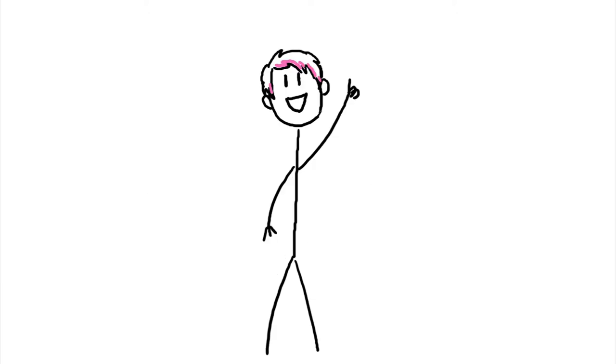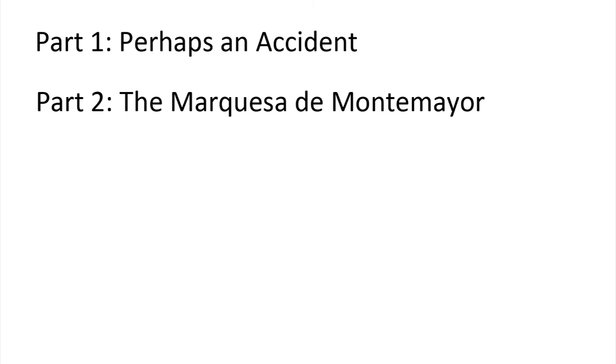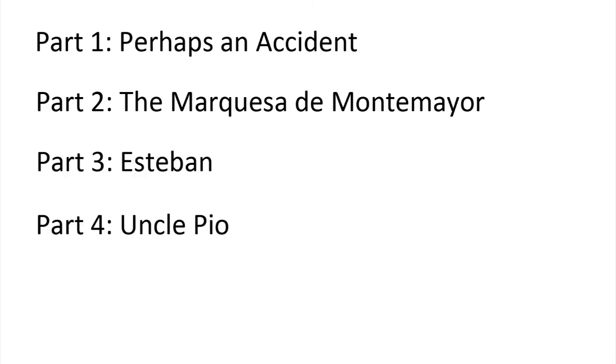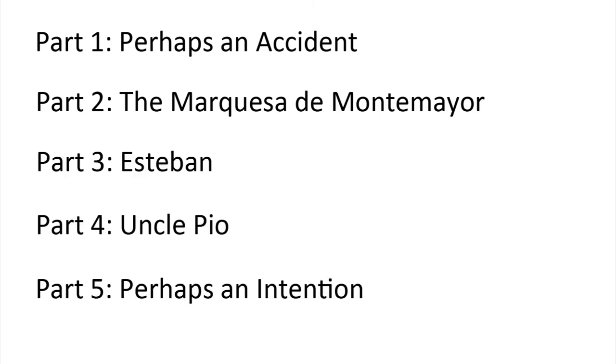To begin, let's talk about structure. The book is written in five parts: perhaps an accident, the Marquesa de Montemayor, Esteban, Uncle Pio, and perhaps an intention.